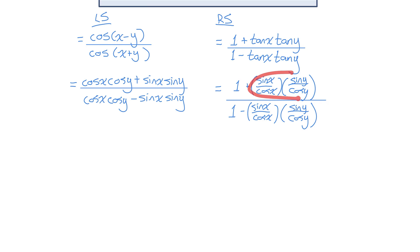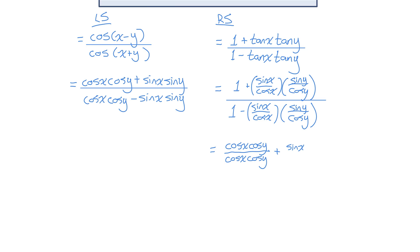I want to show that they're the same, so I'm going to rewrite each tan function using the quotient identity as sine over cos. I notice when I multiply those fractions together the denominator is going to be cos x cos y, so I'll change the 1 to cos x cos y over cos x cos y in the numerator. And I'm going to do the same thing in the denominator — rewrite that 1 as cos x cos y over cos x cos y.